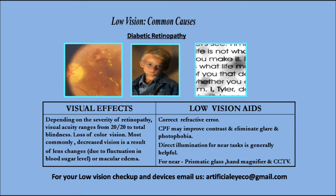Moving on to diabetic retinopathy — what are the visual effects? Depending on the severity of retinopathy, visual acuity ranges from 20/20 to total blindness. Loss of color vision is common. Most commonly, decreased vision is a result of lens changes due to fluctuation in blood sugar level or macular edema.